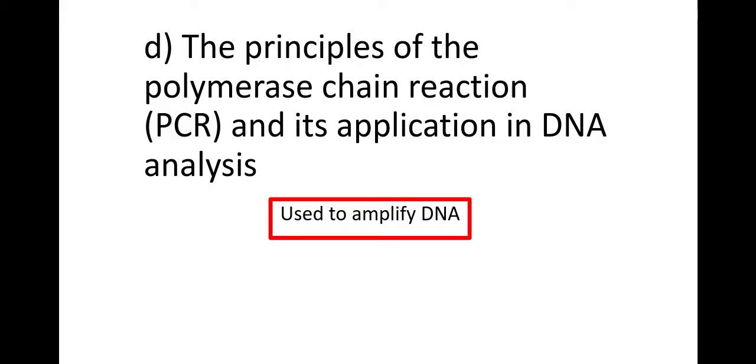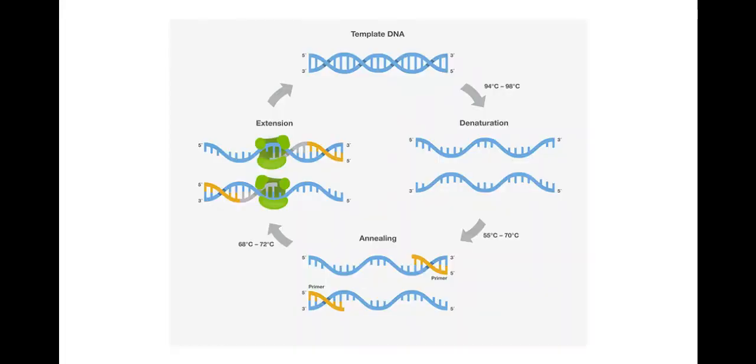So PCR works using this simple method. The first thing that you would do is heat up the DNA which we want to replicate. You would heat that up to a high temperature to break the hydrogen bonds between the bases. That's called denaturation.